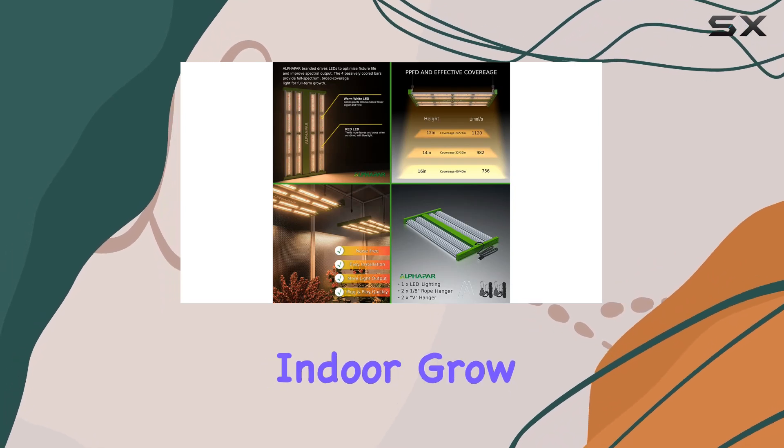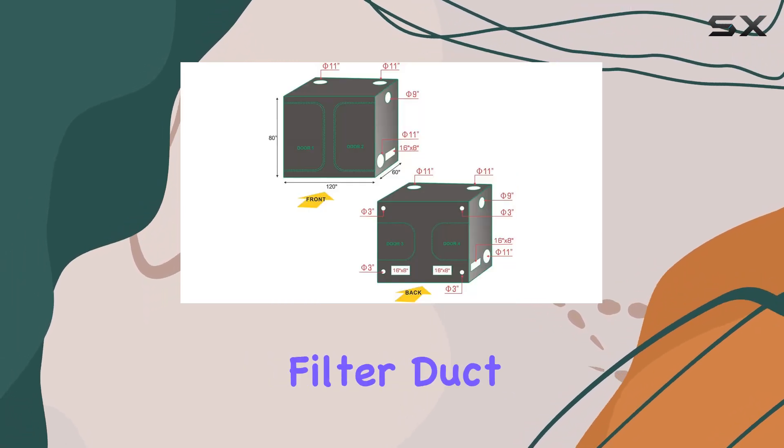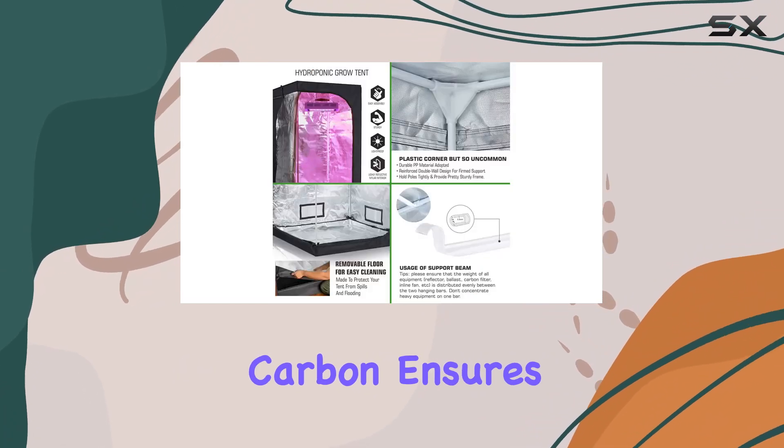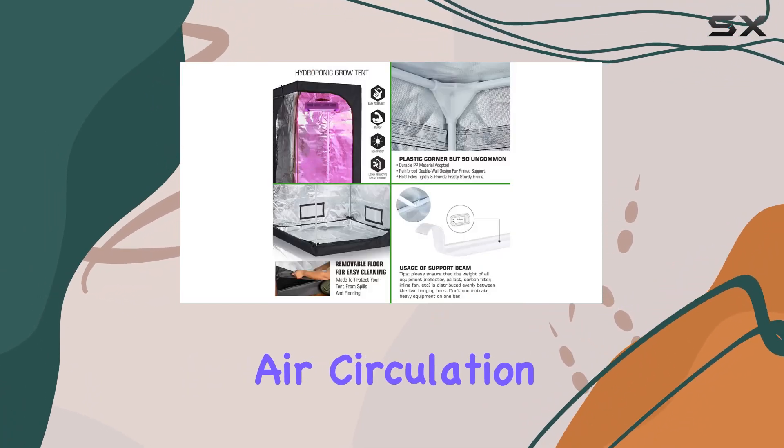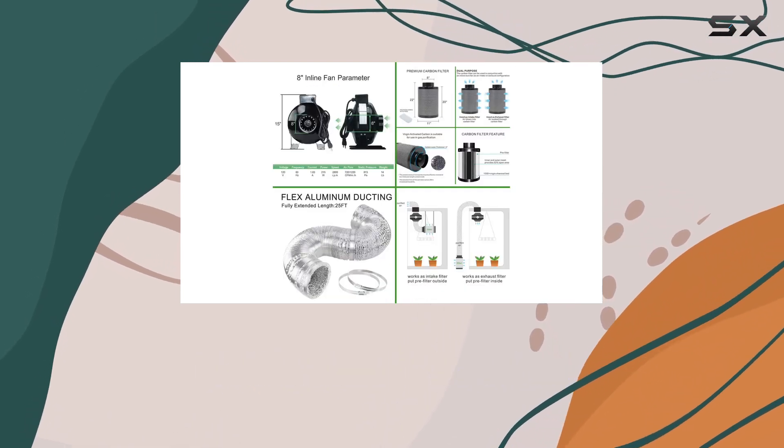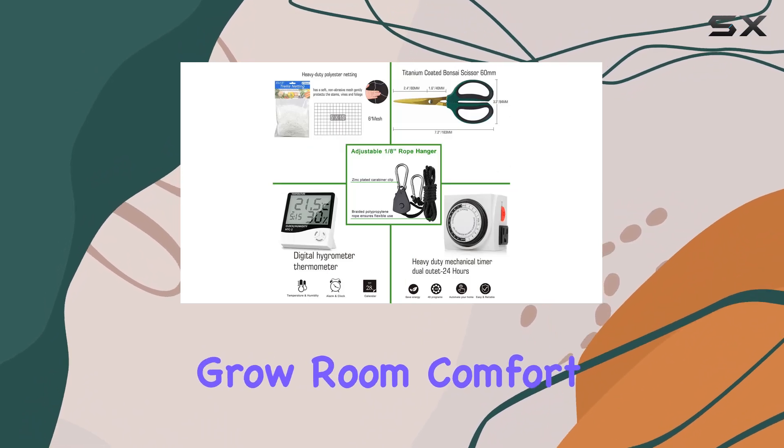Ventilation is key in any indoor grow setup, and the included fan-filter-duct combo with a pre-filter and coal-based activated carbon ensures clean, odor-free air circulation. The ceramic-coated composite fan blades reduce noise and vibration, enhancing overall grow room comfort.